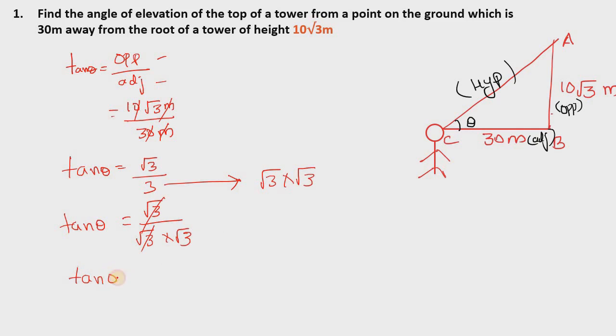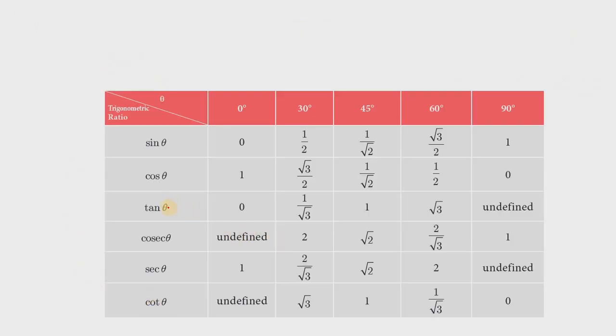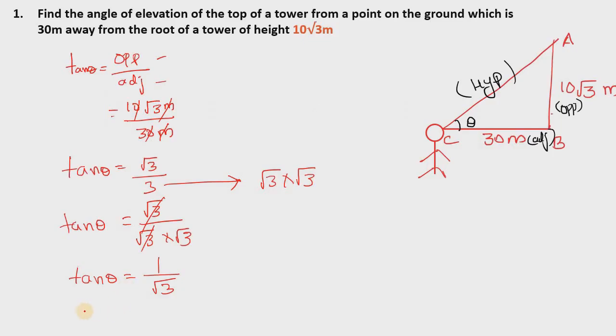So tan theta equals 1 by square root of 3. If you look at the trigonometric table, tan of 30 degrees equals 1 by root 3. So theta equals 30 degrees.